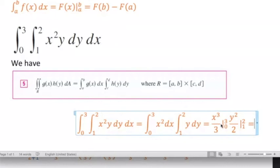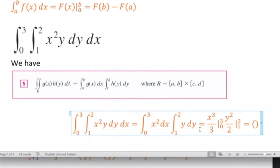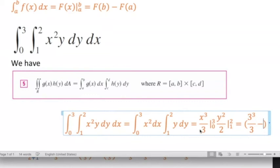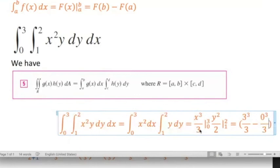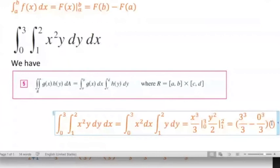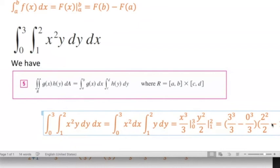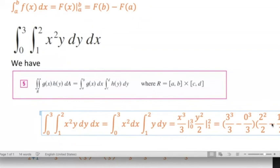This equals what? The first value is three to the power of three divided by three minus zero, like this. This is the first part. Times the second part, which is with respect to Y, is two squared divided by two minus one squared divided by two also.